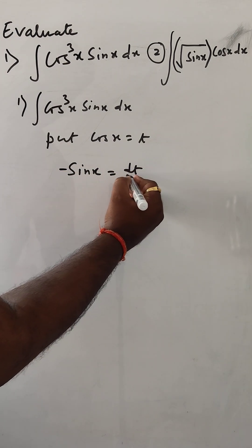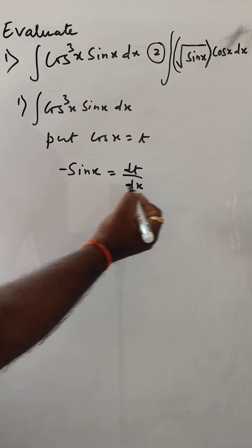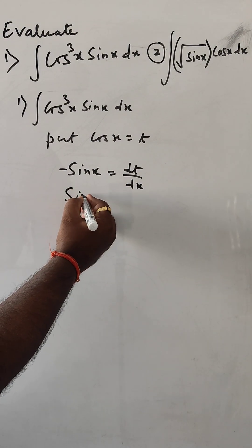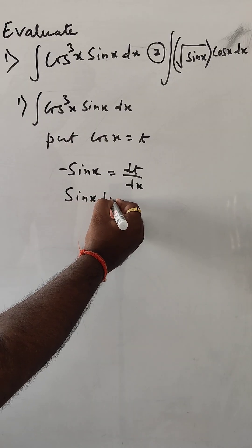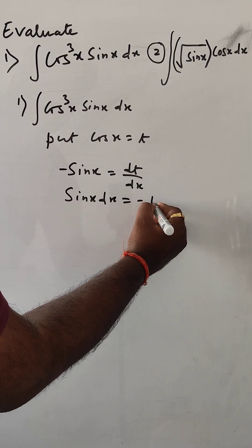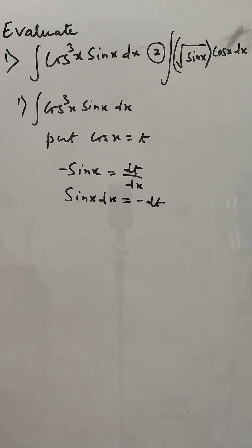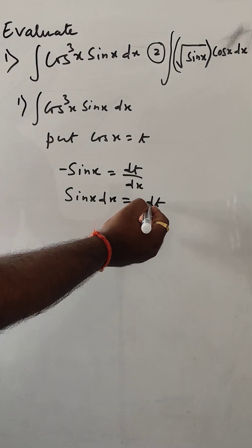So dt/dx equals minus sin x. Here it is sin x dx, and here minus dt. So for sin x dx, we can put minus dt.